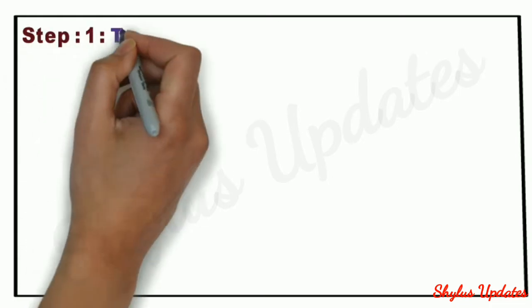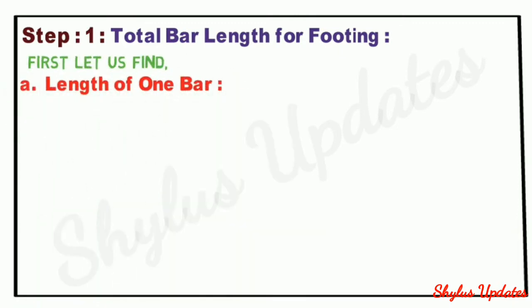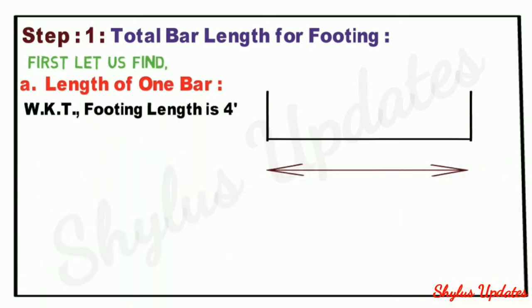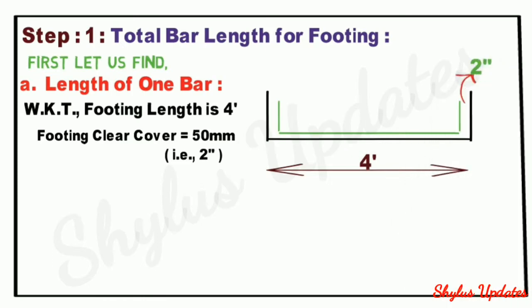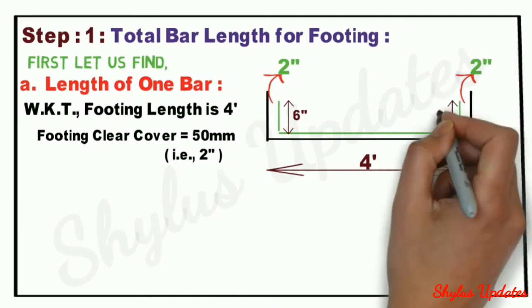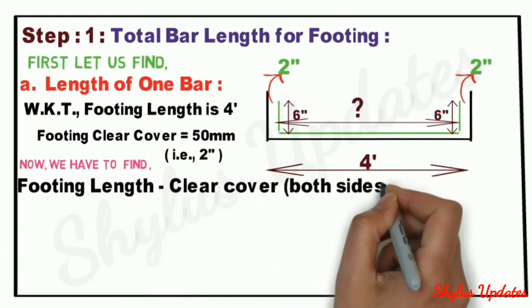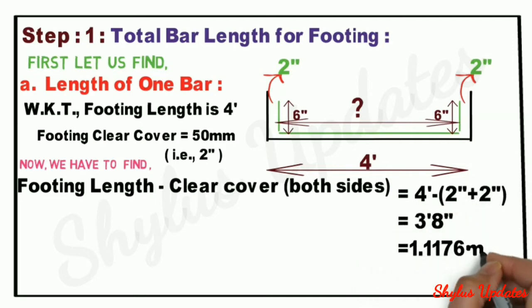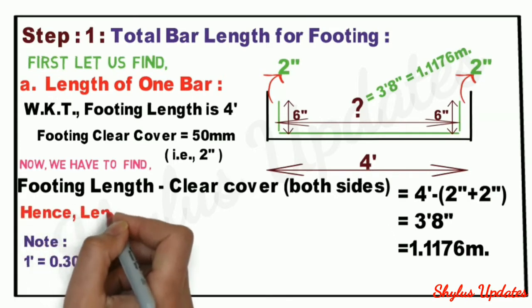Step 1: Total bar length for footing. First, let us find the length of one bar. We know that the footing length is 4 feet. The clear cover is 50mm, i.e. 2 inches. The formula is: footing length minus clear cover on both sides, equal to 4 feet minus 4 inches. When we solve this, we get the answer 3 feet 8 inches, that is 1.1176 meters.